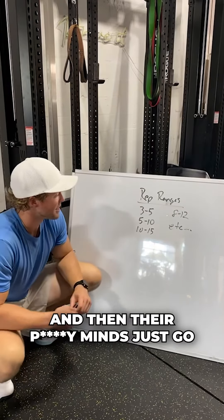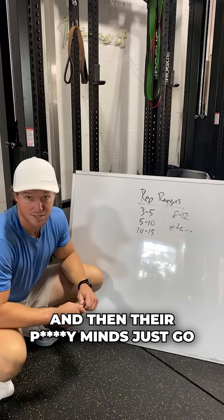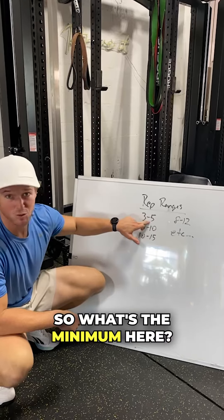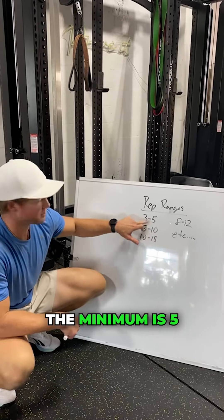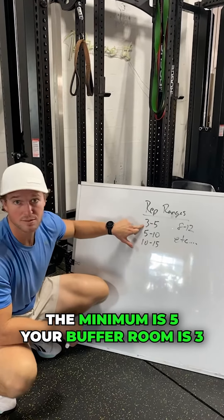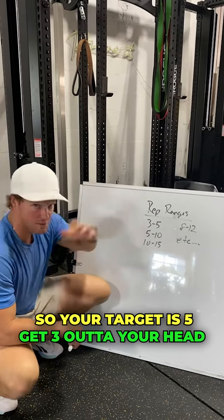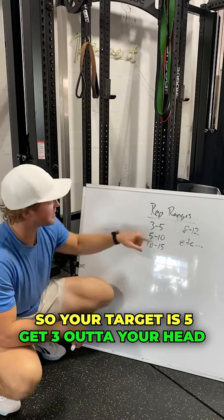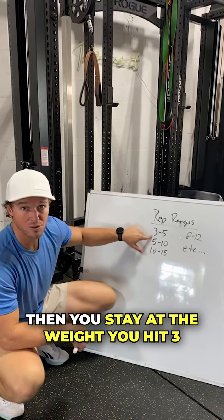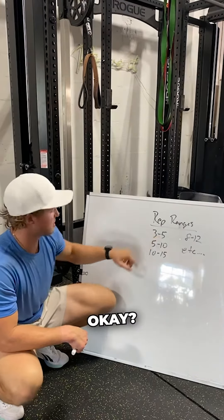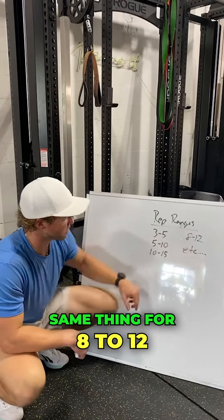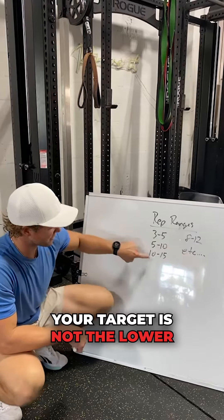Now here's how to approach it. A lot of people see 3 to 5 and their minds just go, 'I'm just going to do 3.' Well, you don't earn going up in weight until you hit 5. The minimum is 5, your buffer room is 3. Your target is 5 — get 3 out of your head. If you can't hit 5 and you only hit 3, then you stay at the weight until you get 5. Same thing for 5 to 10, 10 to 15, 8 to 12 — your target is not the lower number.